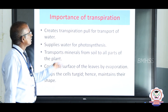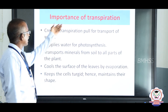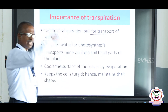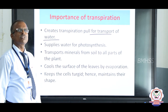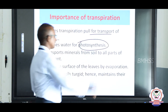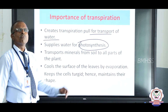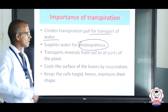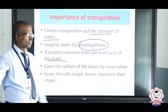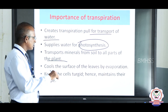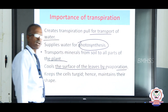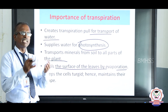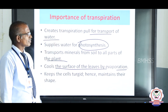The importance of transpiration: it creates transpiration pull for transport of water and helps supply water mainly for photosynthesis. It also transports important minerals and nutrients absorbed from the soil to all parts of the plant body. Additionally, evaporation keeps the leaf surface cool and maintains the turgidity and shape of the cells.